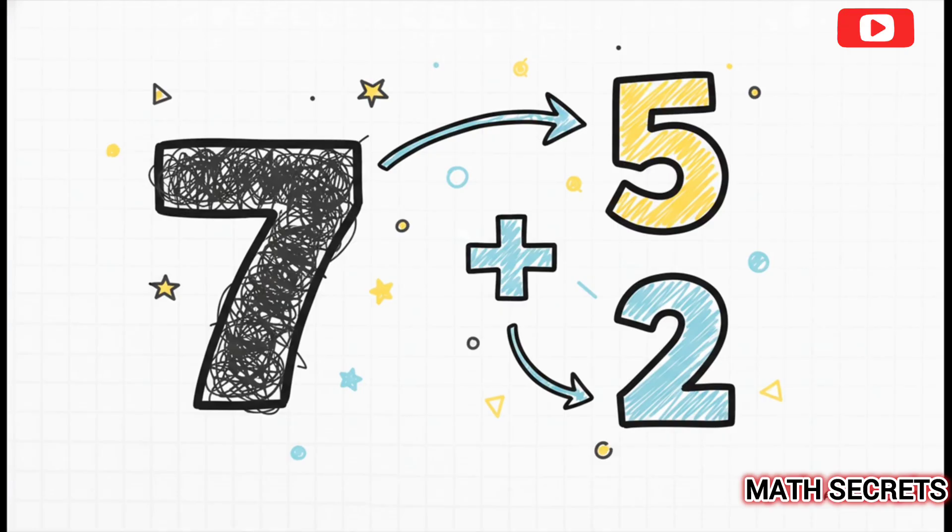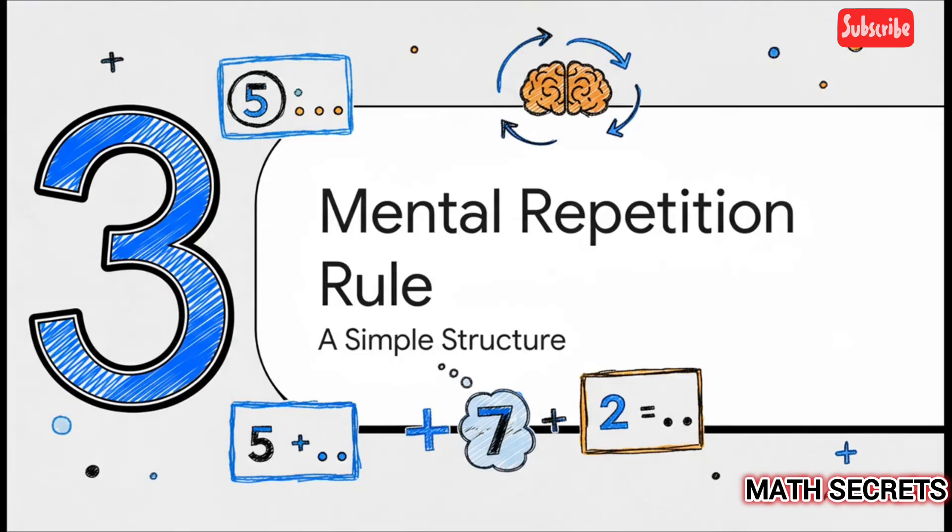We're going to stop thinking about the number seven. Instead, we're going to start thinking about it as five plus two. And with that one simple shift, you can turn a difficult number into two of the absolute easiest numbers to multiply in your head. Now, to make this sound a little more official, let's give this idea a name. We're going to call it the mental repetition rule.